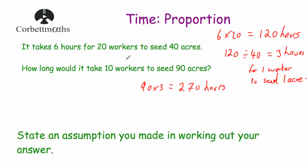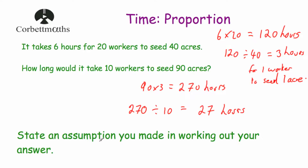But there are actually 10 workers, so it'll take a tenth of the time. If we take 270 and divide it by 10, that tells us how many hours it would take 10 workers to seed 90 acres. So 270 divided by 10 is equal to 27 hours. We're also asked to state an assumption: one big assumption is that each of the workers works at the same rate, since some workers work faster than others.